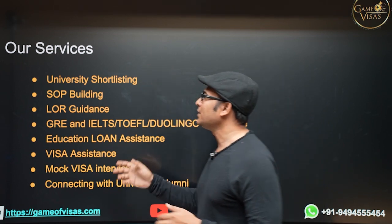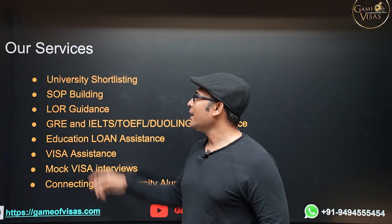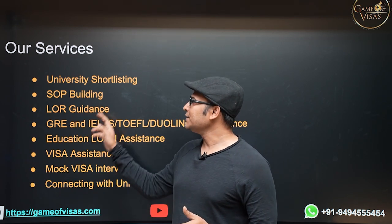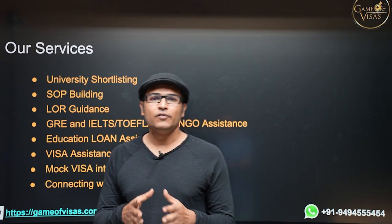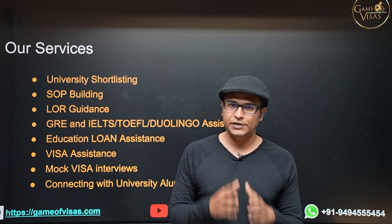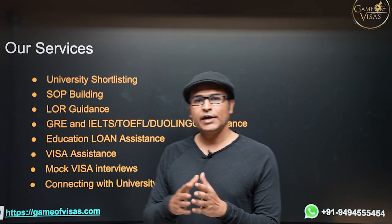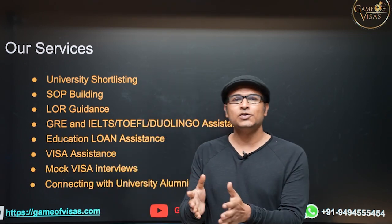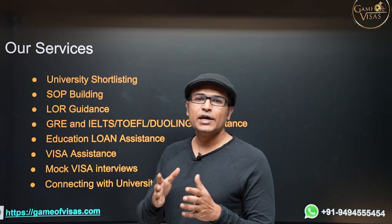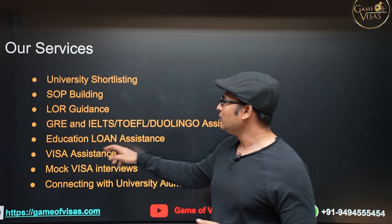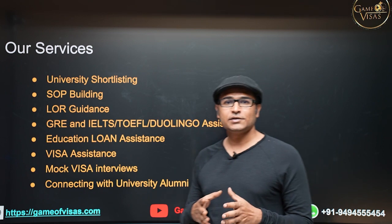And these are all the services that we provide: university shortlisting, so depending on your profile we will shortlist what are the universities that you have to apply, and statement of purpose building, and then LOR guidance, and GRE and English test assistance, and education loan assistance. So you don't have to have any collateral, which means without any security, now you can get education loan. Getting education loan is very simple these days. And whatever the amount of fee that you have, you have a range of universities, you can apply for 10 lakh universities, 20 lakh universities, or 50 lakh universities, but whatever it is, you are going to get complete education loan and you can pay off your education loan in 1 year after you get a job. And then we do visa assistance, mock visa interviews, and then connecting with the university alumni.